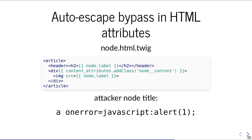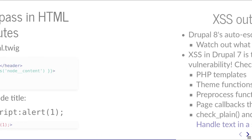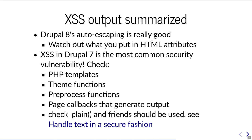There is the OWASP cross-site scripting cheat sheet — I encourage you to check that out. XSS summarized: auto-escaping is really good in Drupal 8, but be careful with HTML attributes. In Drupal 7 it's unfortunately a nightmare — you have to check PHP templates, theme functions, preprocess, callbacks. There's a good documentation page called 'Handle Text in a Secure Fashion' linked from the slides.